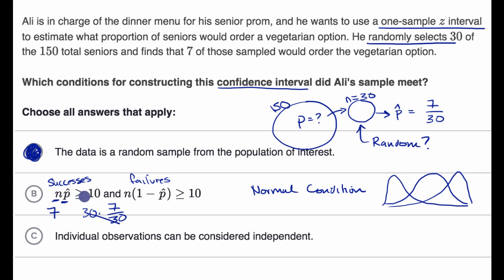And once again, this is a rule of thumb, but this is telling us that our actual sampling distribution might be skewed. Remember, this is just based on one sample, what we're able to figure out. This is one sample z interval. We might be wrong, but we wouldn't feel good that we're meeting the normal condition here. So I would rule this one out.